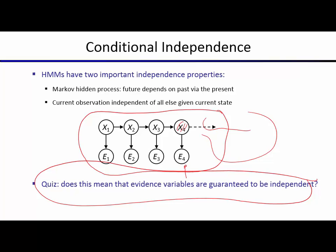Does this mean evidence variables are guaranteed to be independent of each other? For example, is e2 independent of e3? Checking all paths: the path between e2 and e3 goes through x2 and x3. The first triple is a common cause with middle node not observed — active. The next triple is a causal chain with middle node not observed — active. Since all triples are active, e2 and e3 are not guaranteed to be independent. However, they are conditionally independent given x2 or x3.